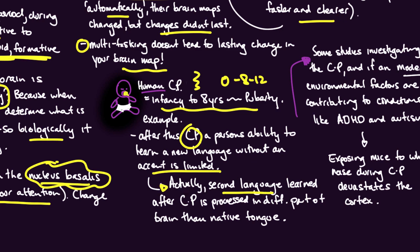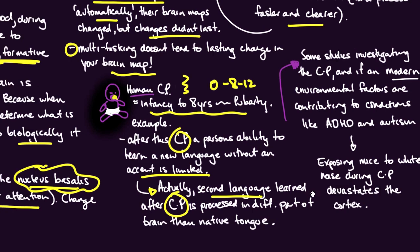After this critical period, a person's ability to learn a new language without an accent is limited. Your nucleus basalis is switched on and you're learning as much as you possibly can and learning it most efficiently. A second language learned after the critical period is processed in a different part of the brain than the native tongue. If you learn a different language during the critical period, it's all learned in the one area. But if you learn German when you're 26 or 27, it's actually processed in a different part of the brain altogether.